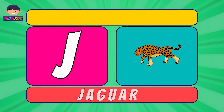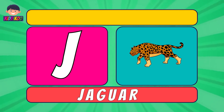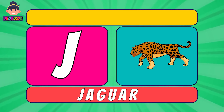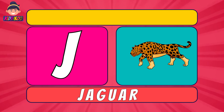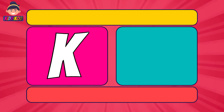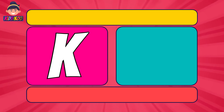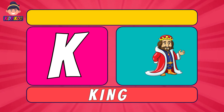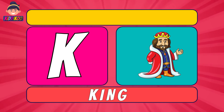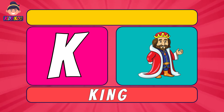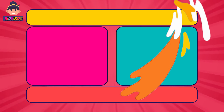Next letter is J. J for Jogger. Jogger. Next letter is K. K for King. King.